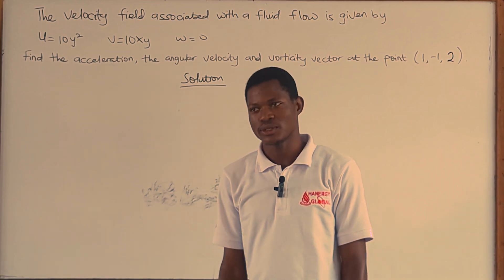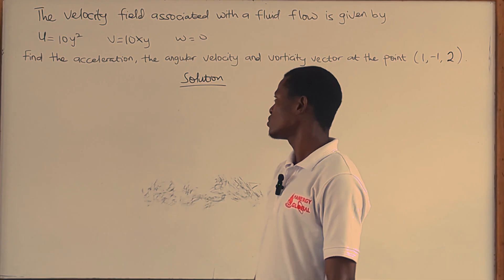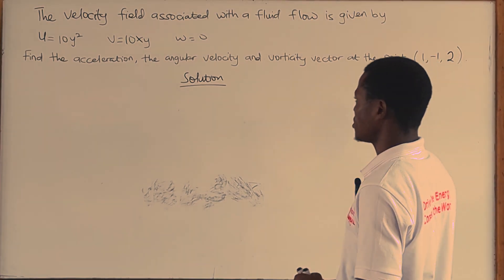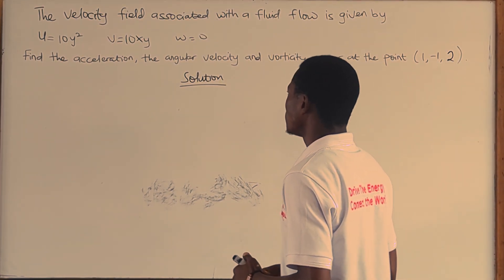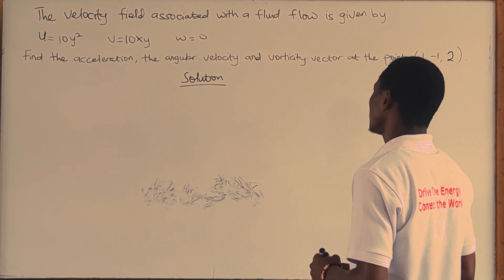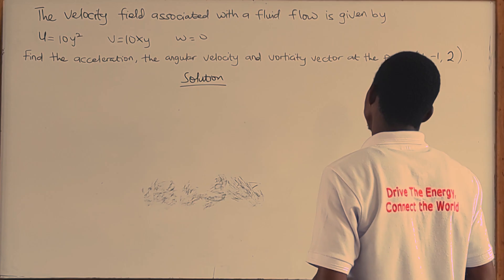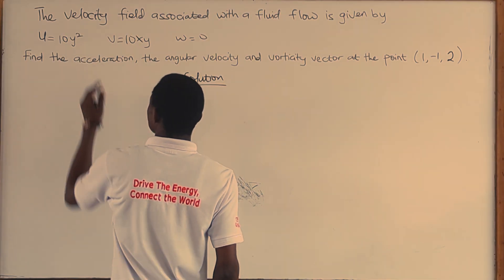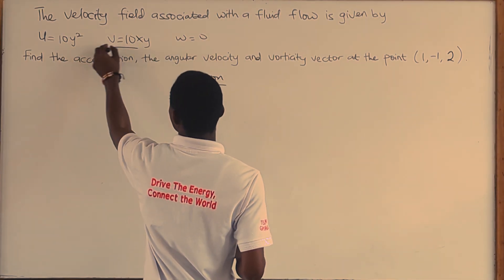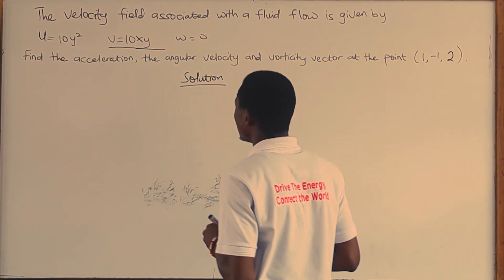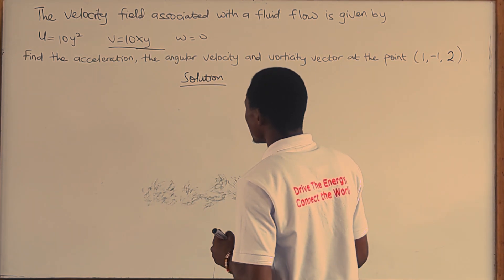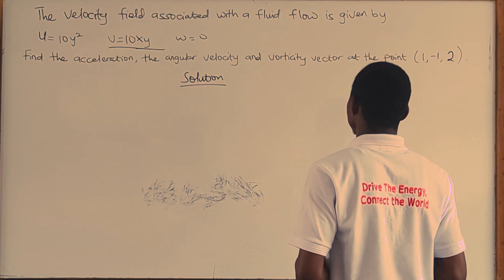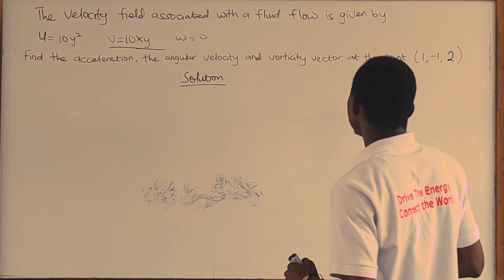Hello everyone, welcome back to this channel. In today's video we are going to solve a question under particular acceleration, vorticity and rotationality. The velocity flow associated with a fluid flow is given by u = 10y², v = 10xy, and w (omega) = 0. We are to find the acceleration, the angular velocity, and the vorticity of the vector at the point (1, -1, 2).